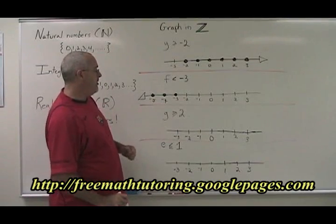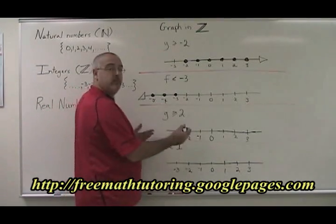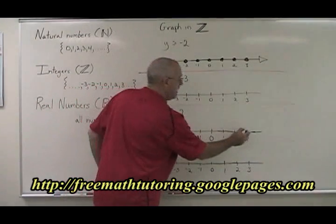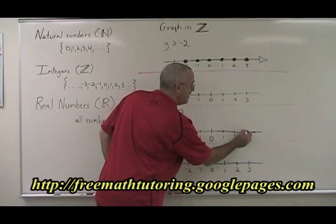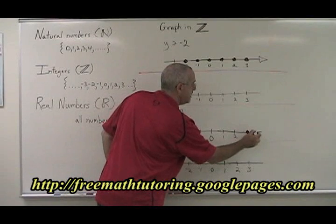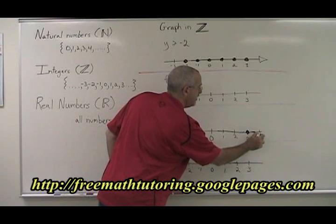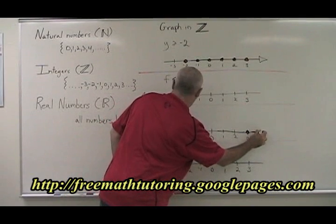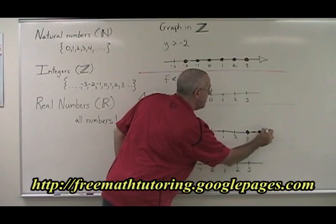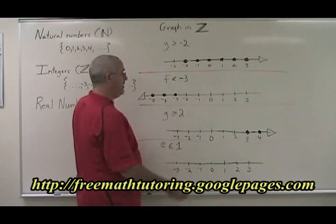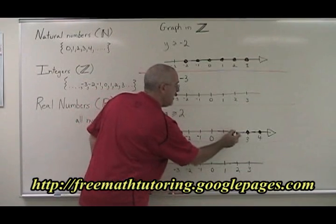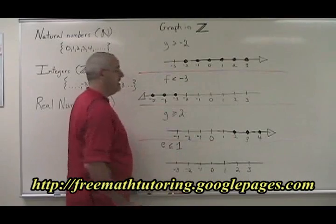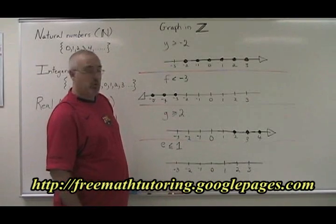G greater than or equal to negative 2. Again, it looks like the natural numbers answer to the same equation. 3 and 4 are greater than 2, and it goes on forever in the positive direction, but we have to include 2 because it is equal to 2.